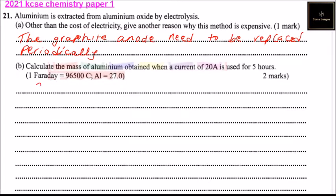What we do here is say charge equals current multiplied by time, which in this case is 20 amperes multiplied by five hours, and you multiply by 60 to make them minutes, so that you have 360,000.